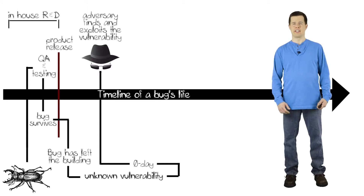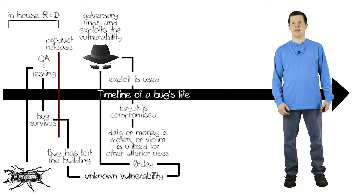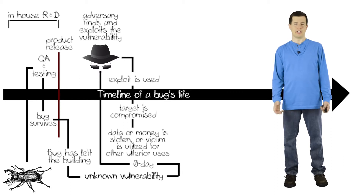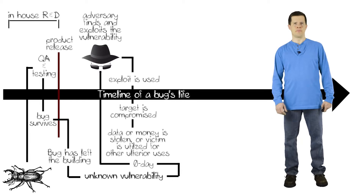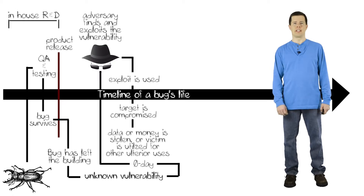And then the attacker finds a way to deploy this exploit, and at this point bad things are really starting to happen. For example, money can be stolen, intellectual property can be stolen, and the attacker, starting from compromised devices, can launch further attacks.